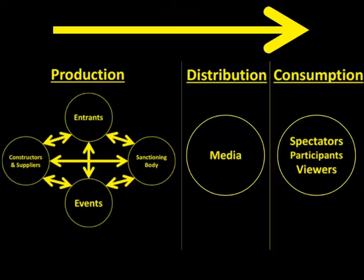Here we have an all-encompassing graphic describing the motorsport industry: starting with production — the origins and core of the sport — then over time the media involved in spreading it. Those of you who are journalism majors, that's where you come into the fold. Then also consumption — spectators, participants, and viewers. Increasing the number of spectators grows distribution and creates more reasons for TV to want to cover a particular racing series. For example, the Chili Bowl, an indoor race in Tulsa every January, has grown so much in demand that it now sells out and is broadcasted on cable network TV.